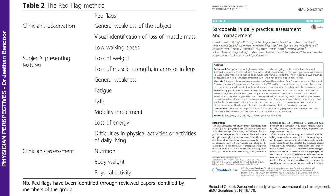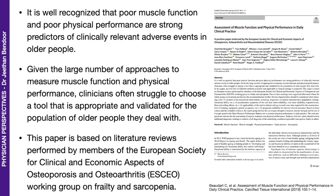I will present in the next slide another paper which I will take you through to the end of the presentation, published by the same group: Assessment of Muscle Function and Physical Performance in Daily Clinical Practice, published in 2019. The same group speaks about the given large number of approaches to measure muscle function and physical performance, noting that clinicians often struggle to choose a tool that is appropriate and validated for the population of older people they deal with. This paper can also be used for younger people, not necessarily older people only.